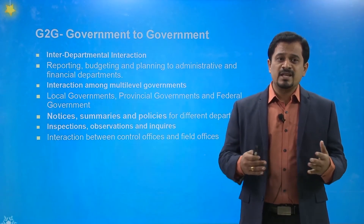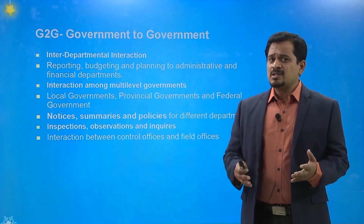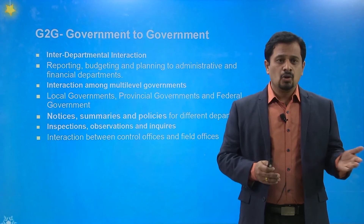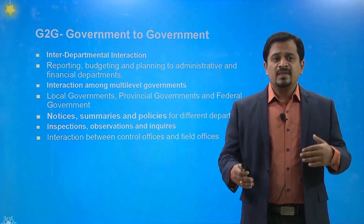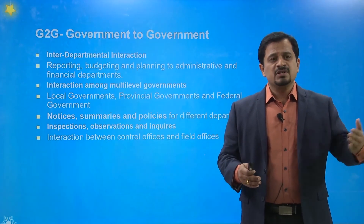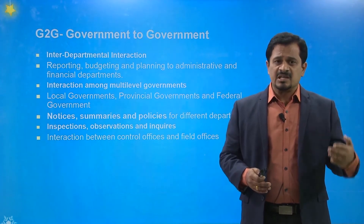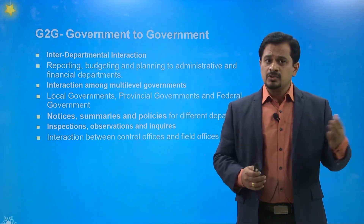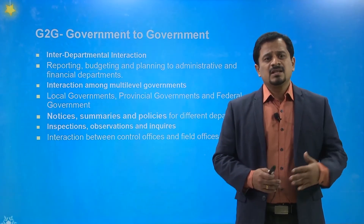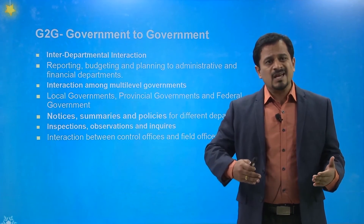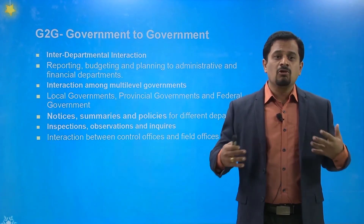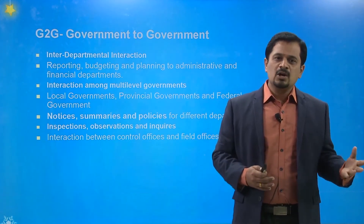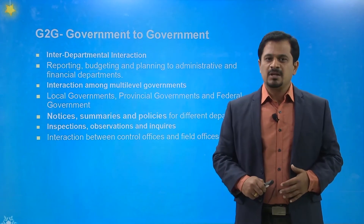Government to government (G2G) is interdepartmental interaction covering reporting, budgeting, planning, administrative, and financial departments. Interactions among multi-level governments — from local to provincial to central government — are included. Notices, summaries, and policies of different departments can be exchanged through G2G services, including inspection, observations, inquiries, and information sharing between control offices and field offices.